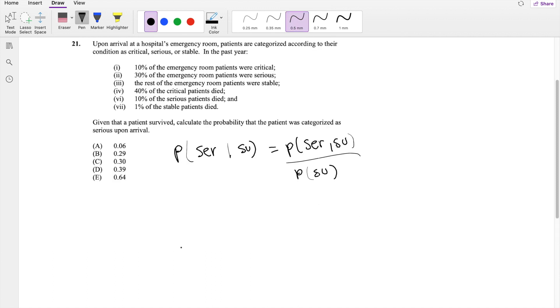So I'm looking for 10% were critical, 30% were serious, and the rest were stable. Stable is 34, so this must be 6, right? Because all probability has to add up to 1.